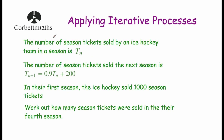Let's have a look at our next question. The number of season tickets sold by an ice hockey team in a season is TN — T subscript N. The number of season tickets sold in the next season is found by the iterative formula TN+1 equals 0.9 times TN plus 200. In the first season, the ice hockey team sold 1,000 season tickets, and we've been asked to work out how many season tickets were sold in their fourth season.